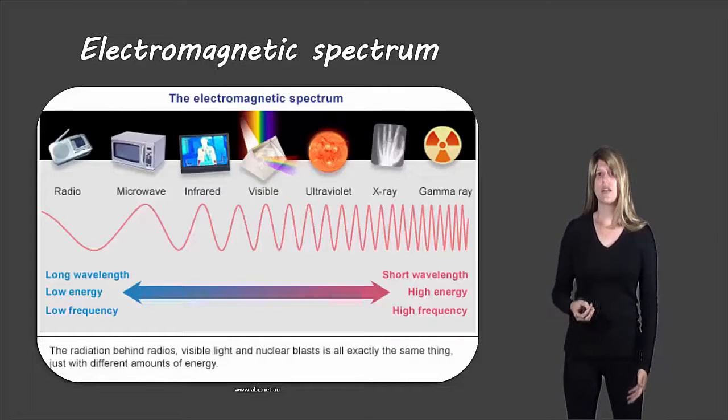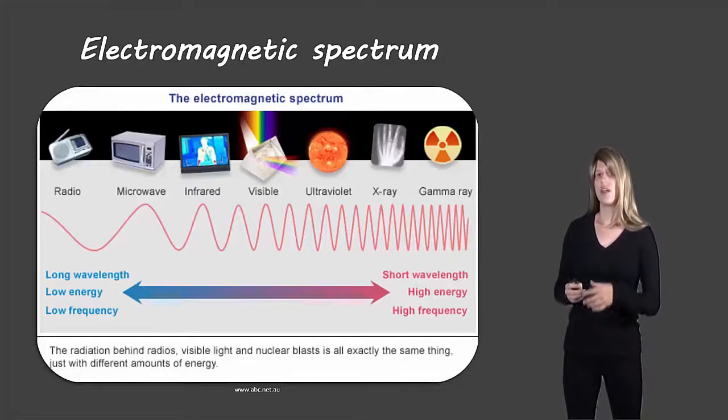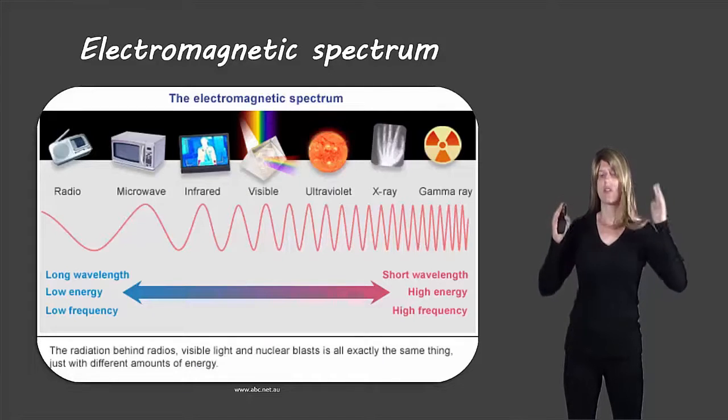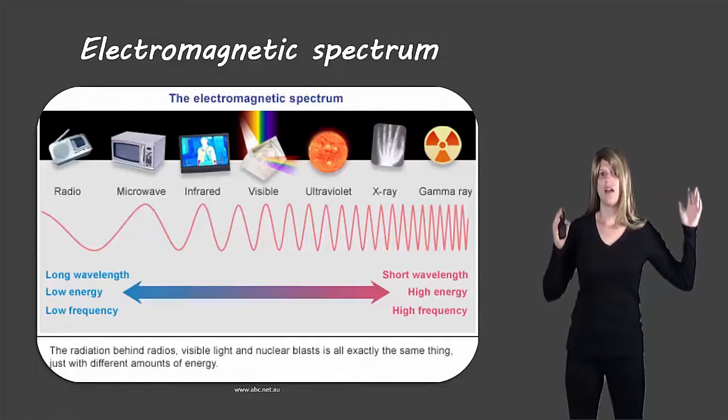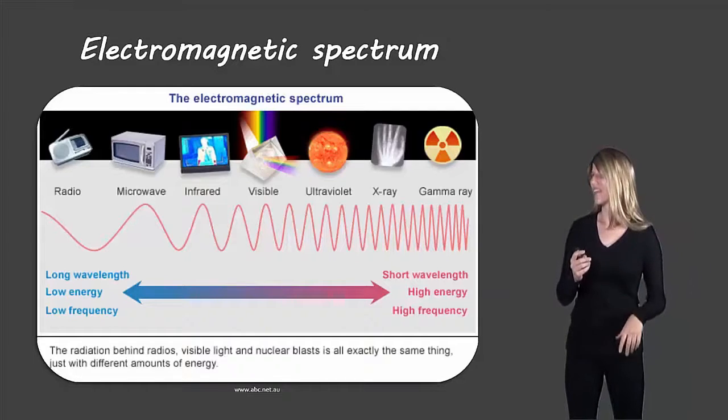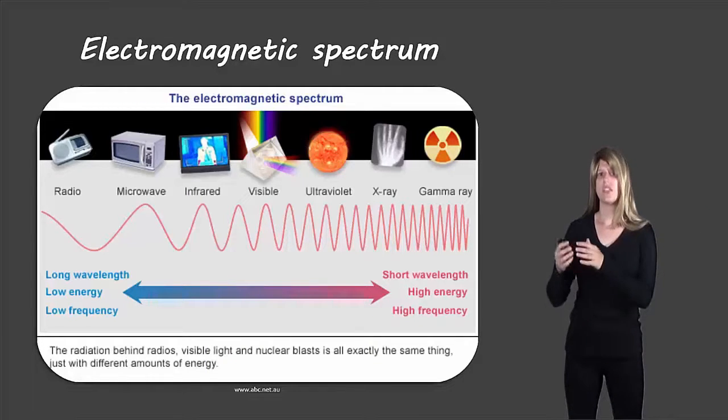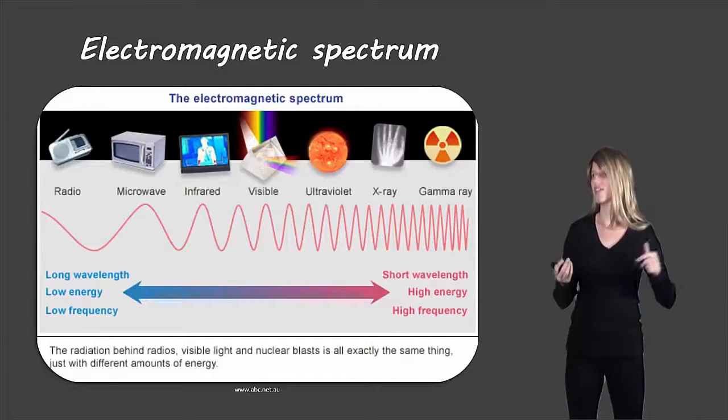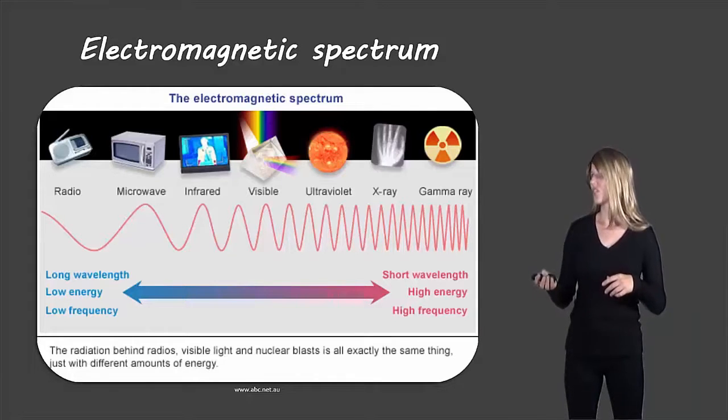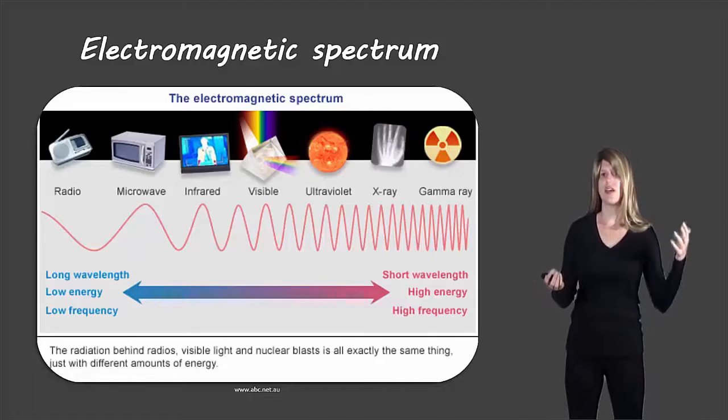So if we take a look at our electromagnetic spectrum and all the different regions, the area where we have microwaves and radio waves, those have a very long wavelength. And it gets shorter as you go across the electromagnetic spectrum. The wavelength gets shorter as you get towards gamma rays. Those are the shortest wavelengths. There's the lowest energy on the radio waves and microwaves end and the highest energy on the gamma rays end. And the lowest frequency on the radio waves and microwaves region and the highest frequency on the gamma ray region.